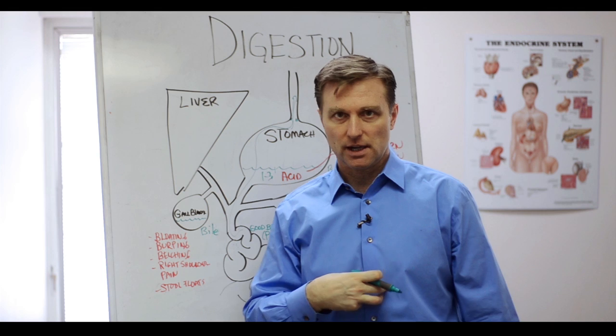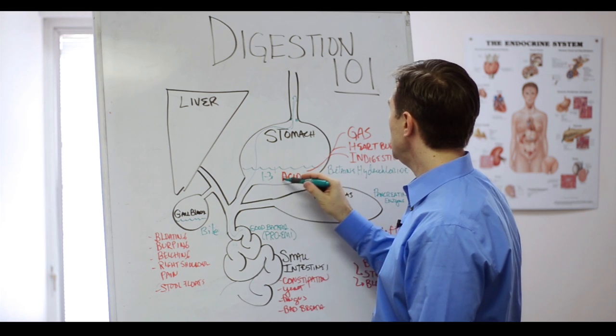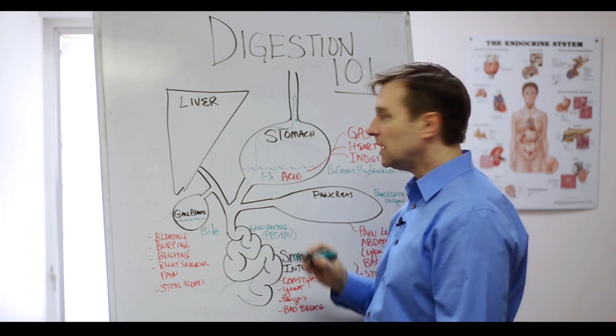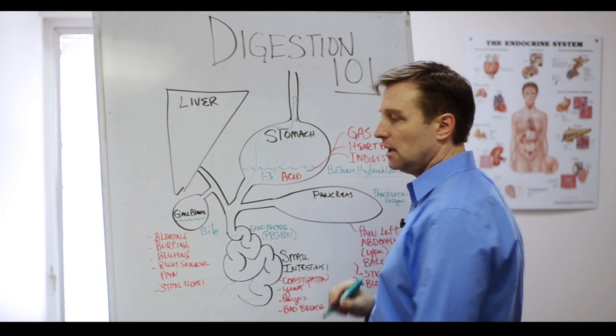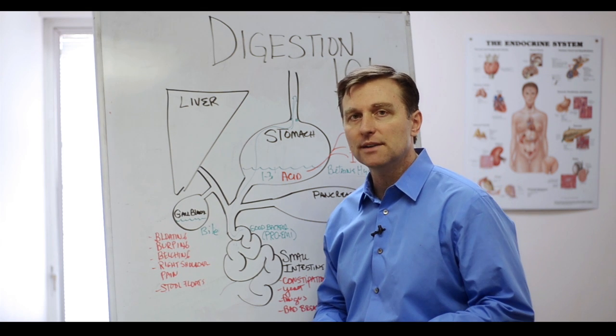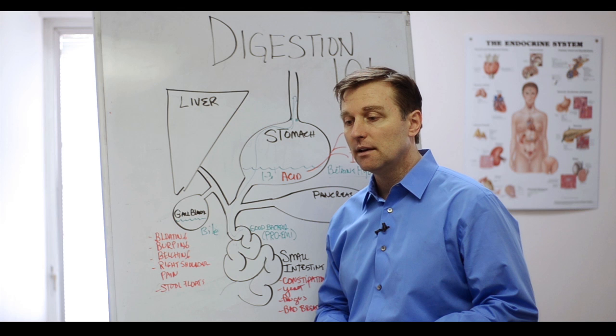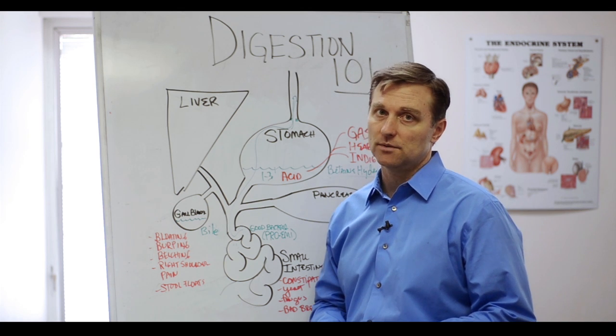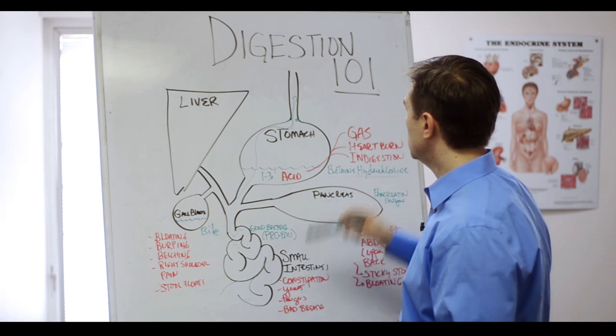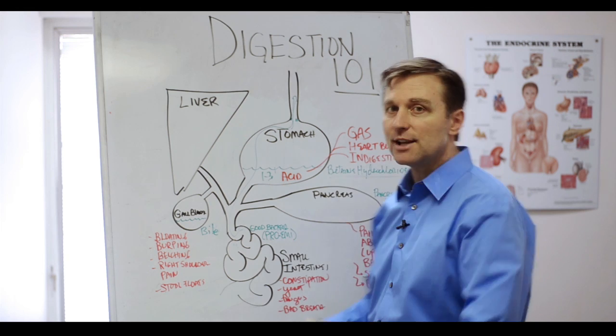Now, indigestion, like the food just sits right here, that means you don't have enough acid. So what is the remedy? Betaine hydrochloride. It comes from beets, and you can get it from the health food store. Take two, three, maybe four with each meal. They're real small, but that will actually give you a lot of relief unless you have an ulcer.